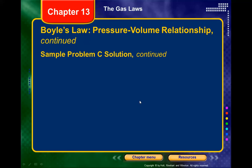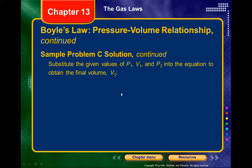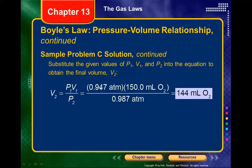Plugging in our numbers: initial pressure times initial volume divided by the new pressure gives us a smaller volume than before. That makes sense — more pressure means less volume. The two products P1V1 and P2V2 are equal: 0.947 × 150 equals 144 × 0.987.